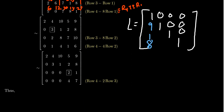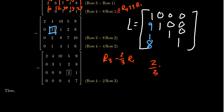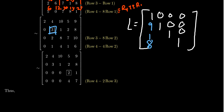We must eliminate the two and the one below the second pivot. To get rid of the two, we take row three minus two-thirds times row two. Two thirds mod 11: adding 11 to the numerator twice gives 24 over three, which is eight. So we take row three minus eight times row two, putting a positive eight in the three-two position of L. To get rid of the one below, we take row four minus one-third times row two. One third mod 11: adding 11 gives 12 over three, which is four. So row four minus four times row two, putting a positive four in the four-two position of L.